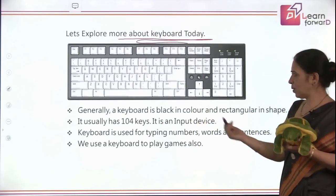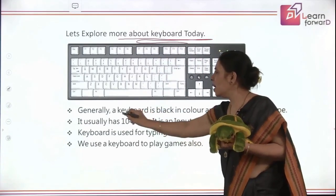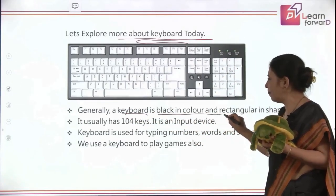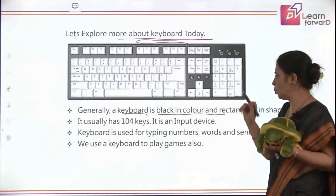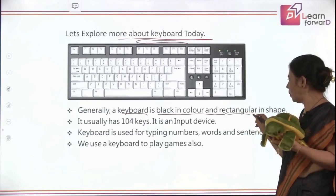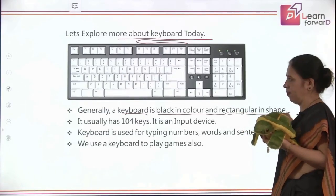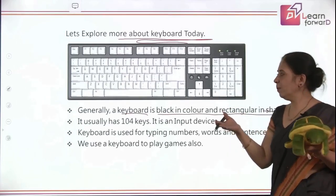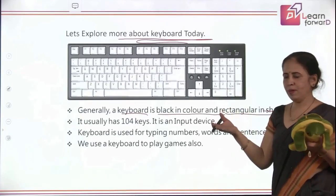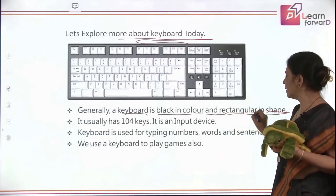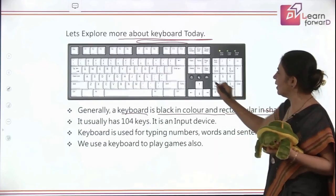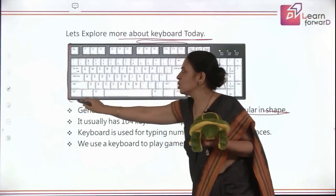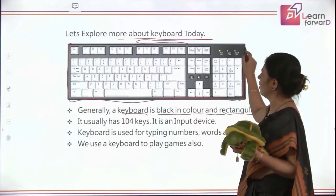So let's read out. Generally, a keyboard is a black color platform — an instrument with rectangular shape. This is attached to your computer. It is black in color normally, and there are certain keys on it. Can you see this shape? This is a rectangular shape.